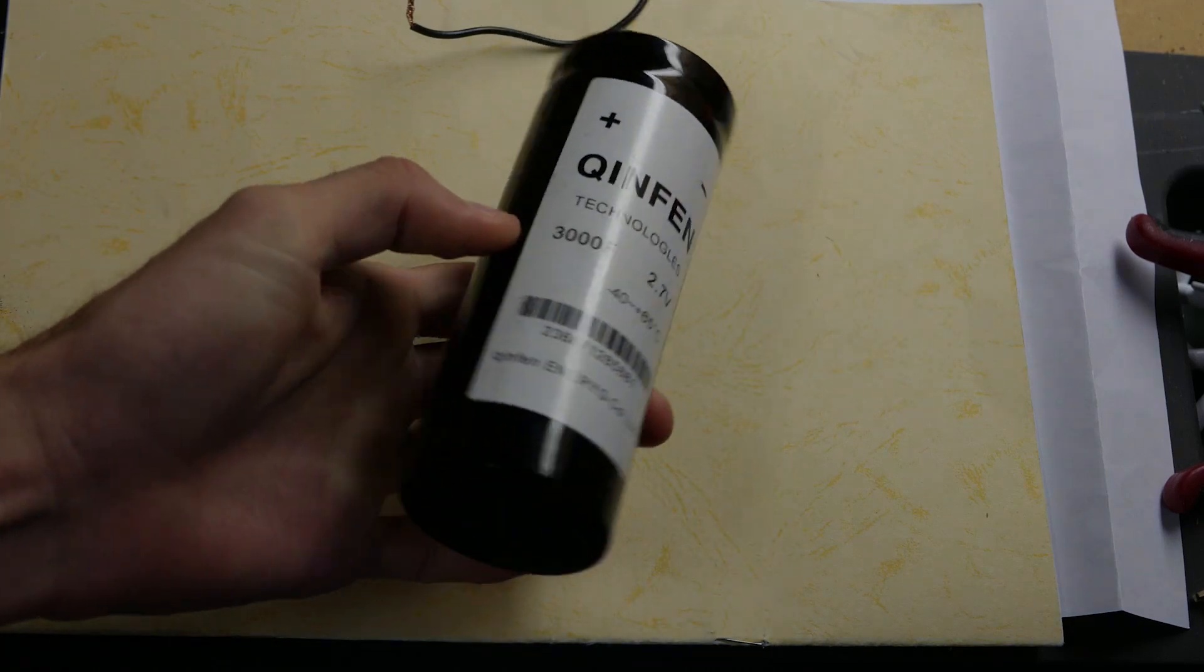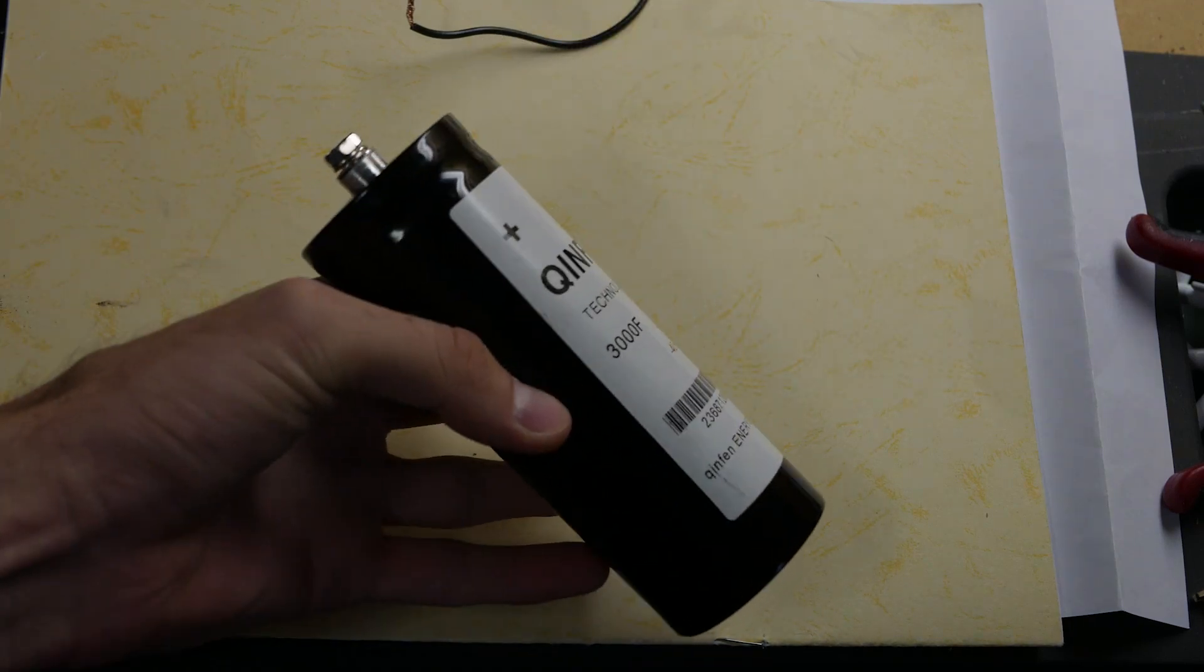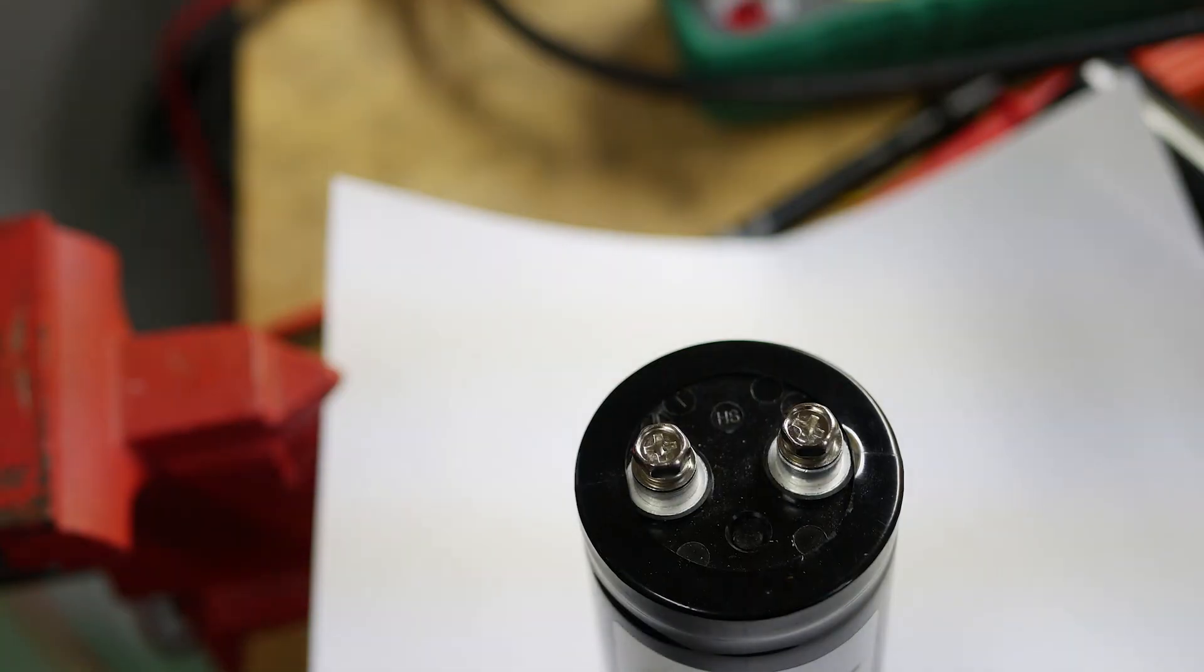Today I will be dissecting a 3000 Farad Ultra Capacitor. Let's get to it. First off, let's remove this shrink wrap.